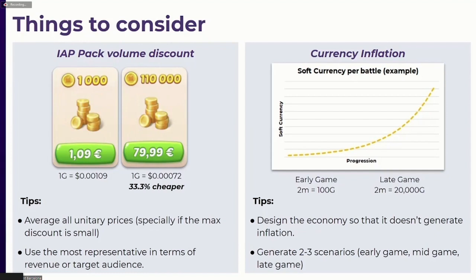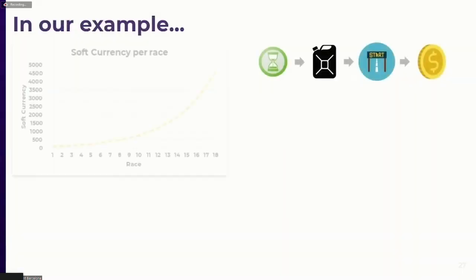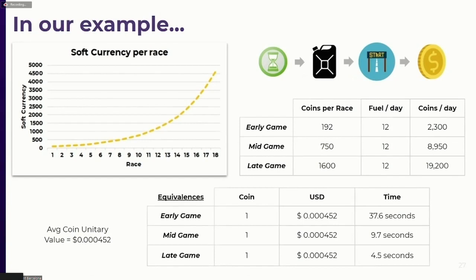Tips for handling currency inflation: the best approach is to design the economy so it generates no inflation or very little inflation. Alternatively, create two or three scenario snapshots at different moments in time — such as early, mid, and late game — and use those as your reference points. In our example car game, time gives you fuel, fuel lets you run races, and races give you currency, with the currency per race increasing as you progress. So we created an equivalence with three scenarios. If your game keeps inflation under control, you may only need a single scenario, making the system much easier to manage.